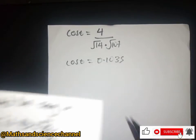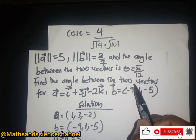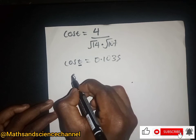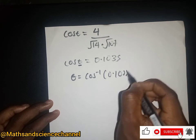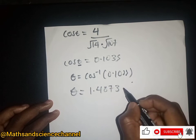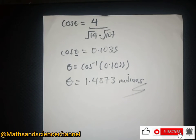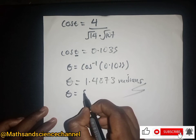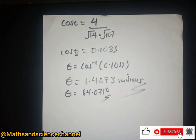The question asks us to find the angle between the two vectors. So we find θ by taking the inverse cosine of 0.1033. Therefore θ = arccos(0.1033) ≈ 1.4673 radians, which in degrees is approximately 84.071°.